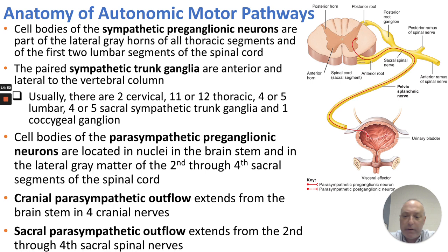The cell bodies of the parasympathetic neurons are located in the brainstem nuclei and the lateral gray matter of the second through fourth sacral segments of the spinal cord. For outflow, cranial parasympathetic outflow extends from the brainstem in four cranial nerves, and sacral parasympathetic outflow extends from the second through fourth sacral spinal nerves.